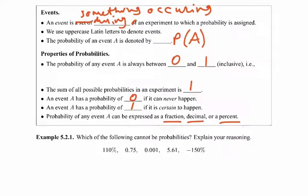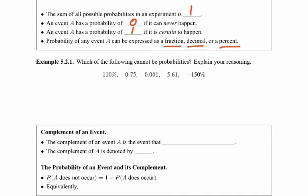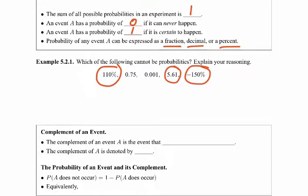The first example: explain which of the following cannot be probabilities. Probabilities have to be between 0 and 1. So 0.75 is okay, 0.001 would be okay. But 110% is over 100%, so that's not a possibility. Probabilities can't be negative, or 150%. And 5.61 is not possible. So those three are not possible probability values.